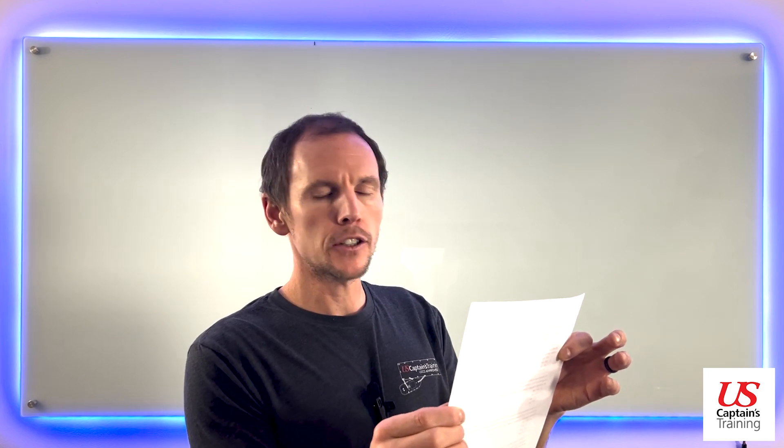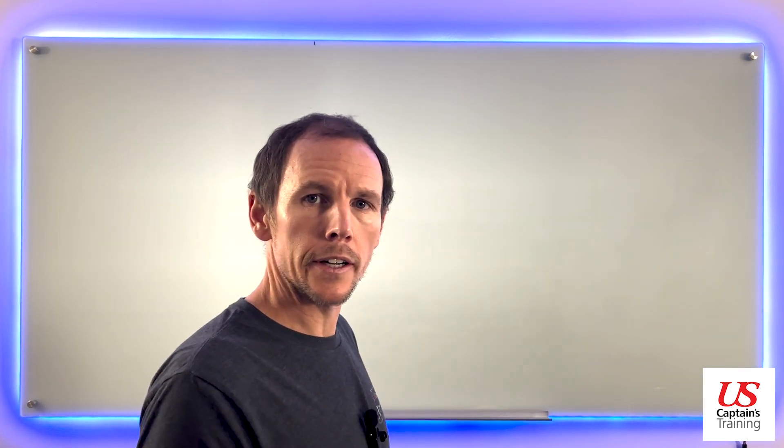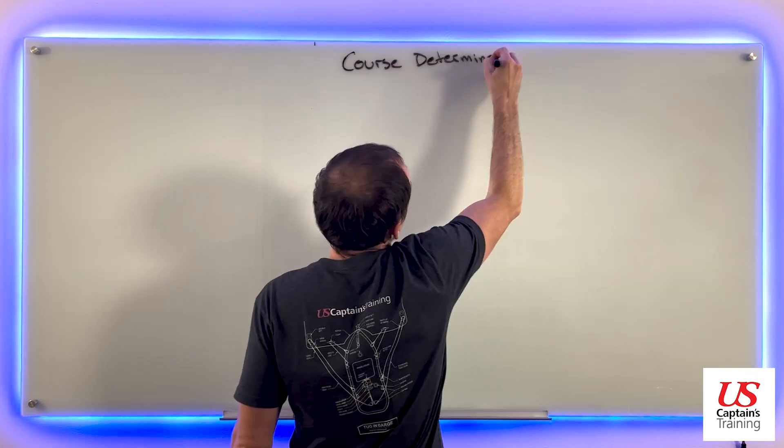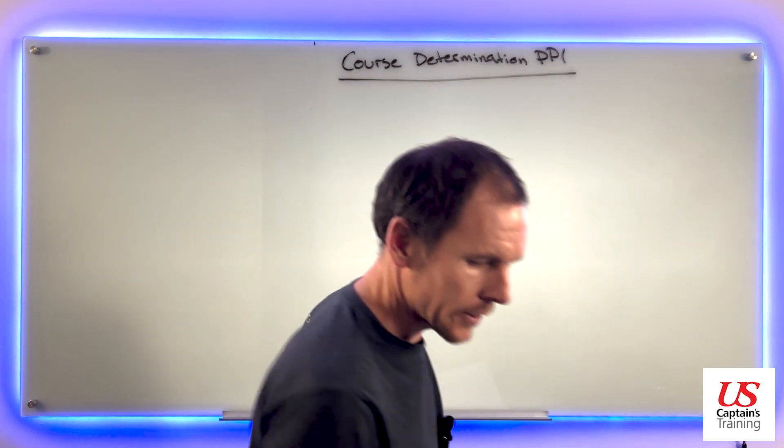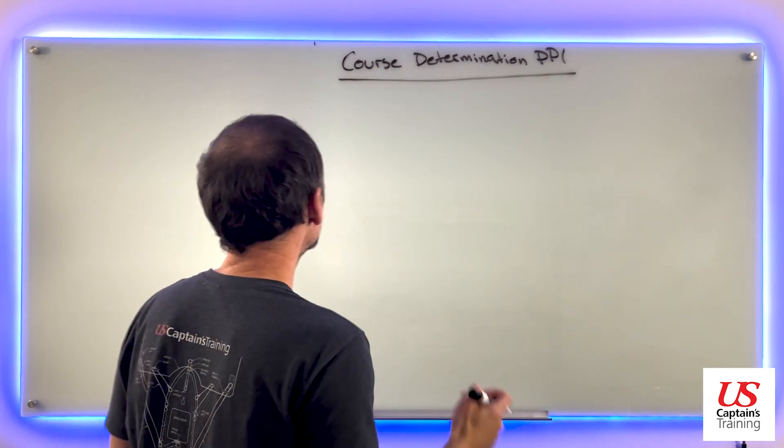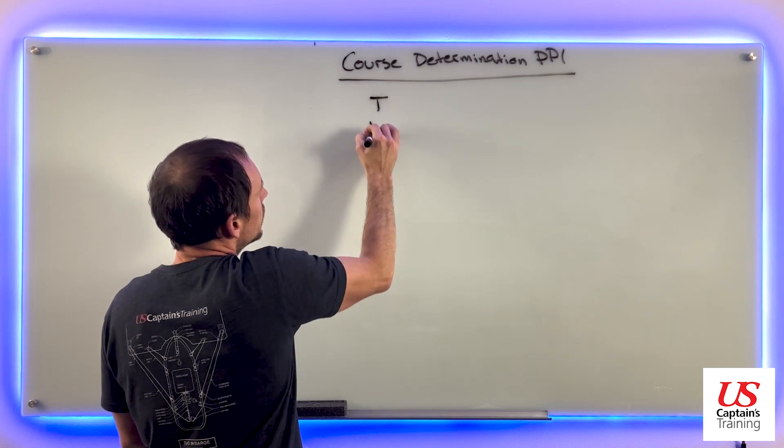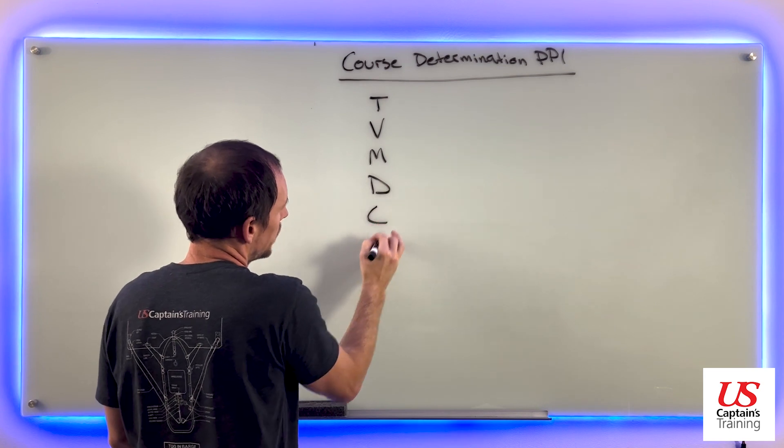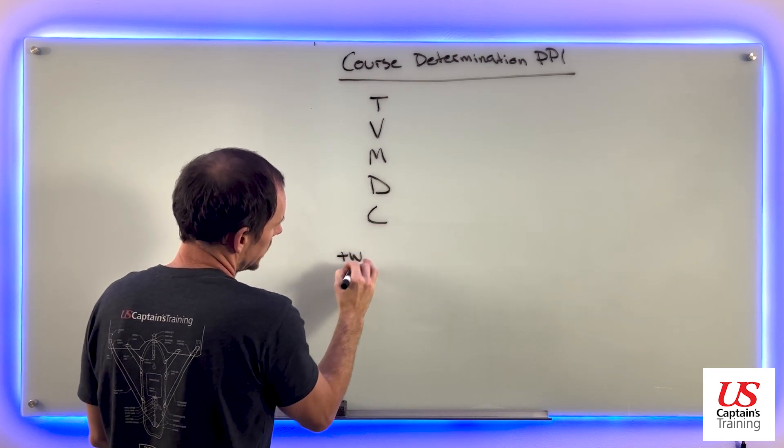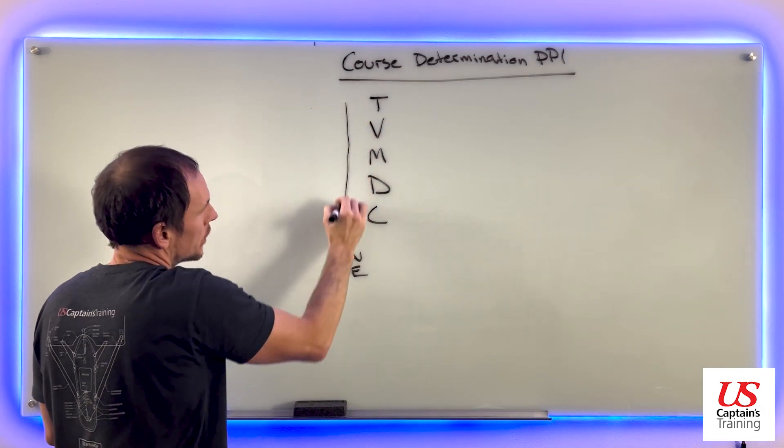Let's throw that information up on the board, correct our compass, and then account for leeway. Course determination practice problem one, and it gave us all this information. So we need a spot to put it, and we say: true virgins make dull company, add whiskey, subtract ethics.